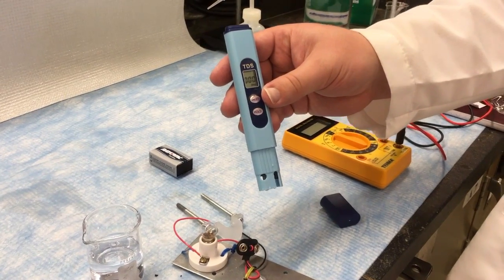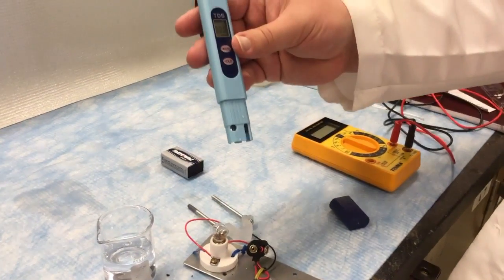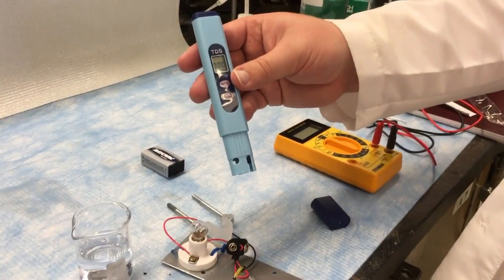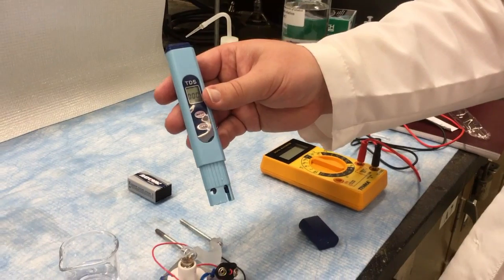Parts per million is not actually a measurement of conductivity, it's a measurement of concentration. The instrument is designed to measure aquarium tanks and assumes things about what's in the tank that allows it to figure out how much is there. We don't need to worry about that much.